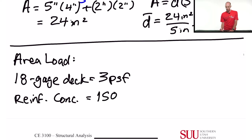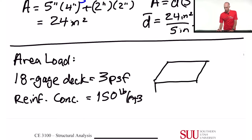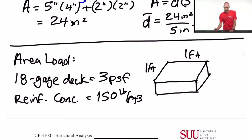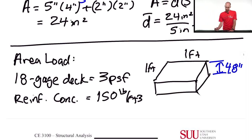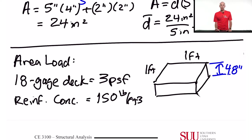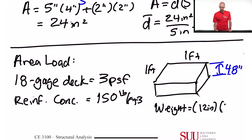For reinforced concrete at 150 pounds per cubic foot, the way I'm going to calculate how much it weighs per square foot is to take a square foot of the concrete — one foot by one foot. The depth is 4.8 inches, the average depth we calculated. So the weight is just the volume: 12 inches times 12 inches times 4.8 inches, times the density of 150 pounds per cubic foot.